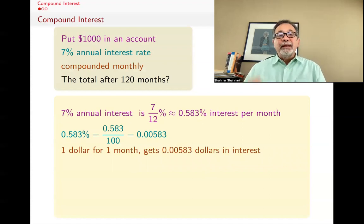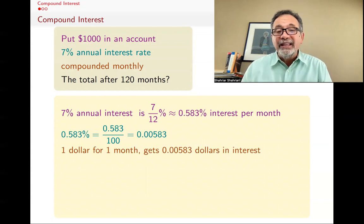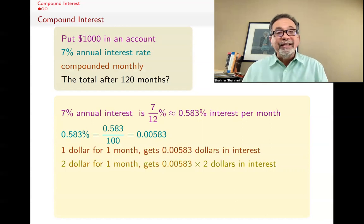So what does that mean? That means that if you have $1 in the bank for one month, you get 0.00583 in interest. It's not that much, not even a cent, a little bit more than half a cent. That's how much you get. But if you had $2, you would get twice that much. If you had $3, you would get three times that much.